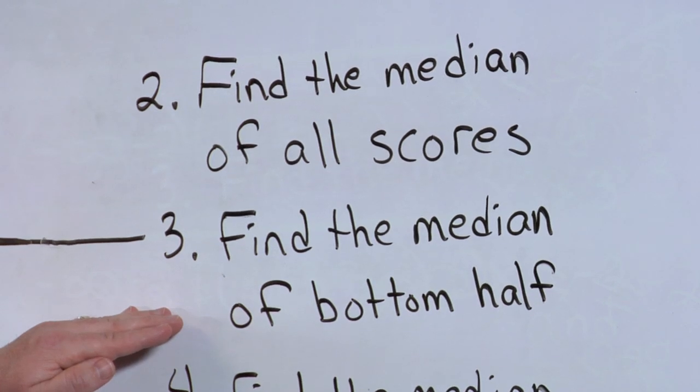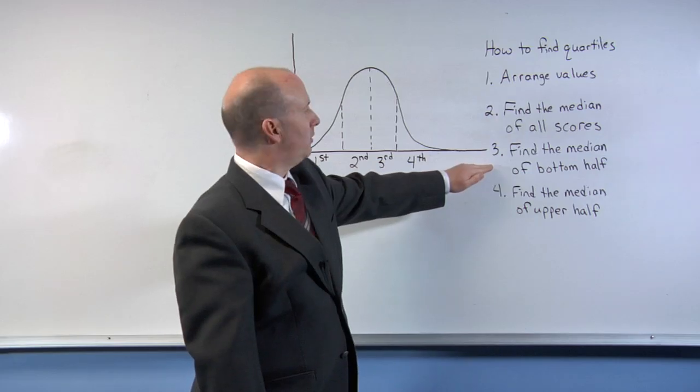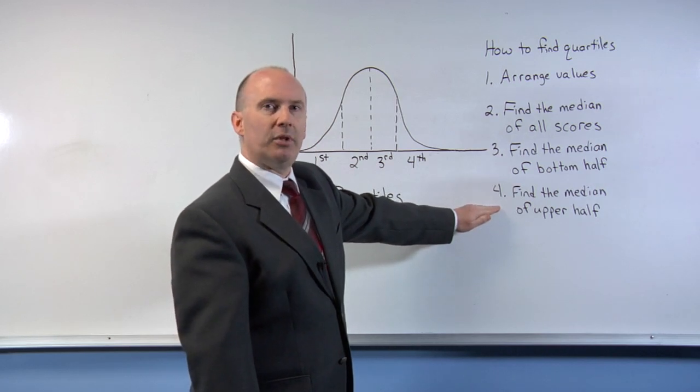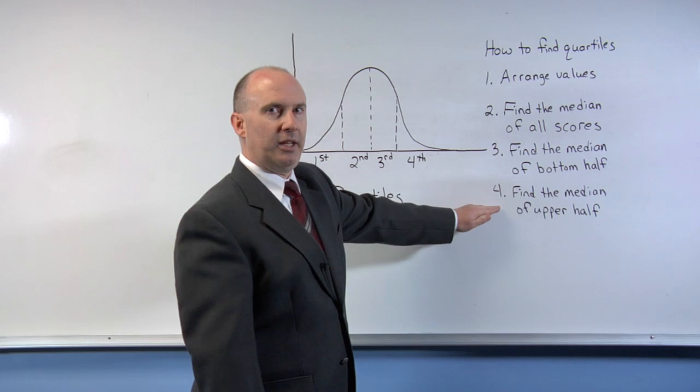Third, take a look at the bottom half of scores and find the median of that group. And finally, take a look at the top group, the upper group, and find its median.